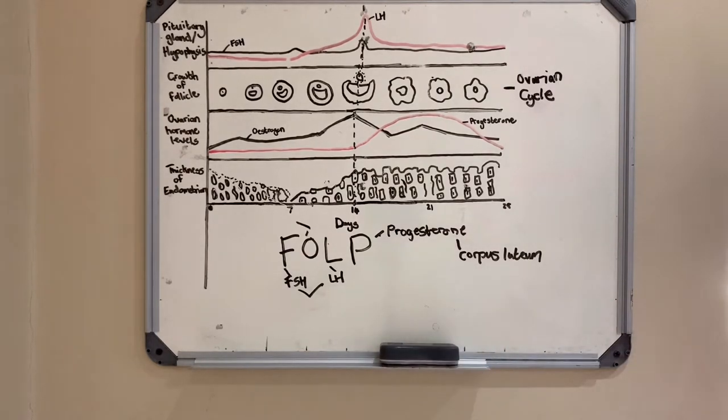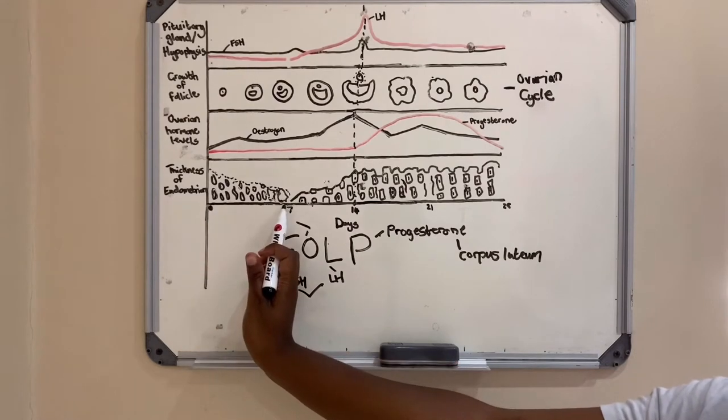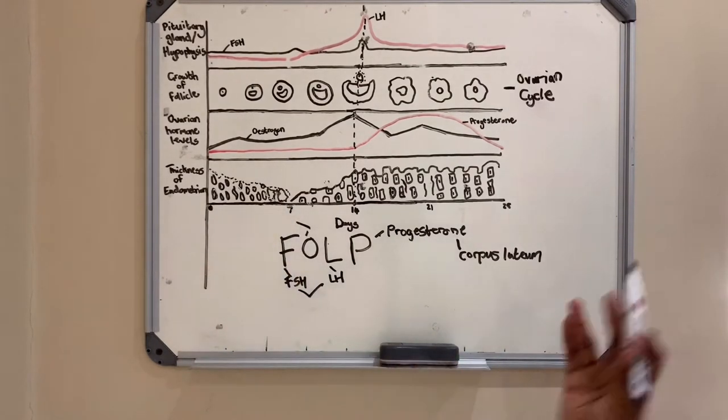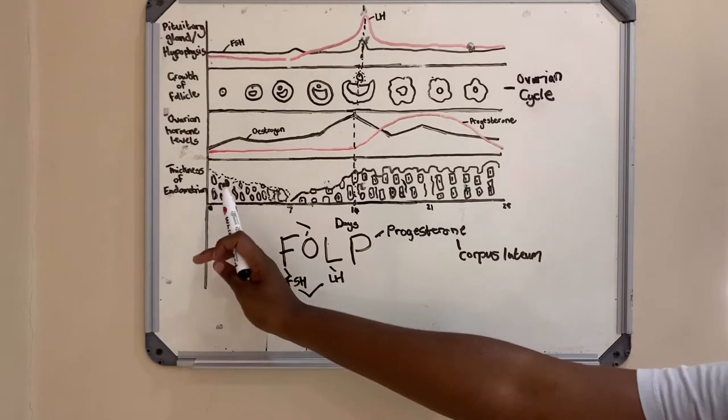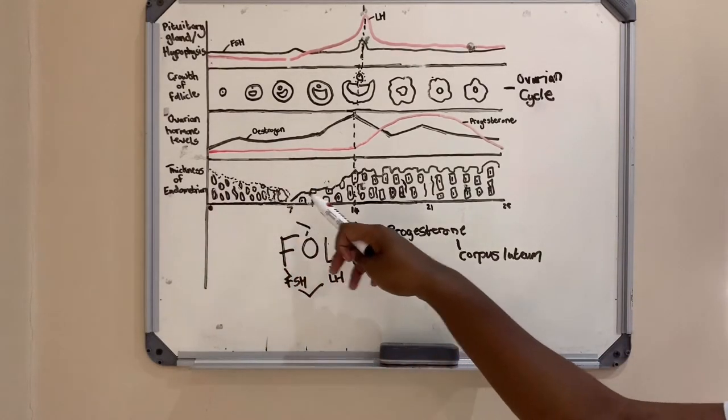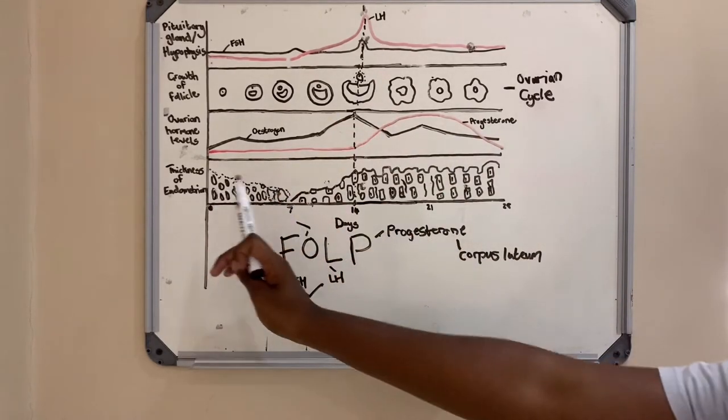You also need to know that between day 1 and day 7 is what is referred to as the period, and that is a normal everyday term that basically describes the shedding of the lining of the endometrium because it gets thicker. Between day 1 and 7, that sheds, so that's when you have your period.